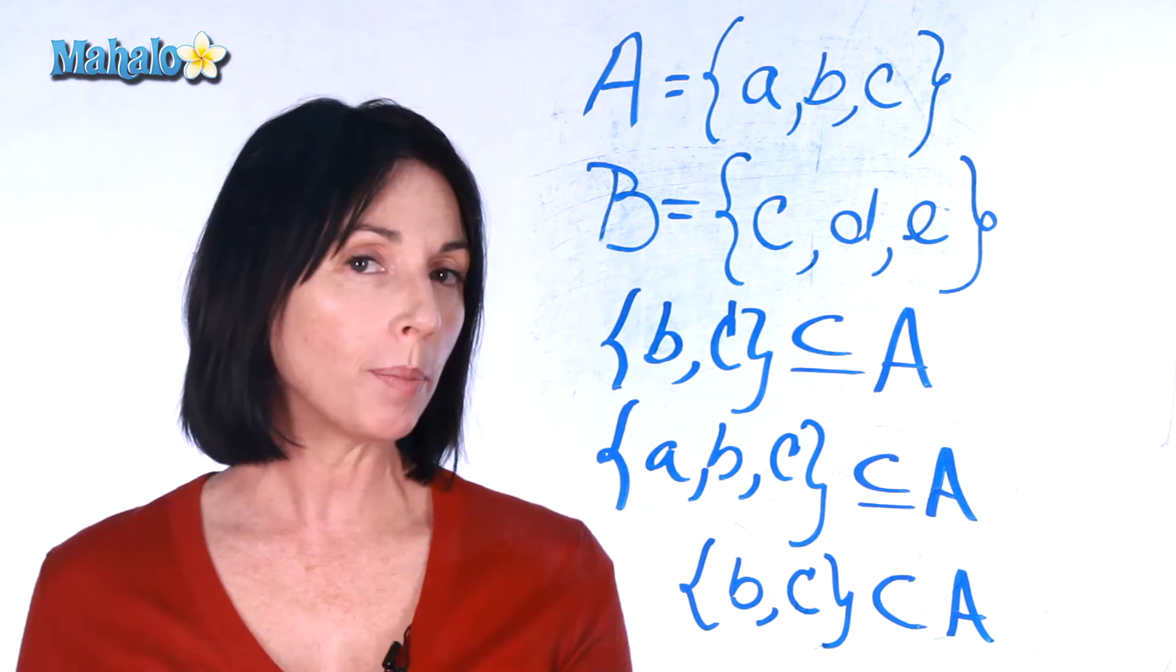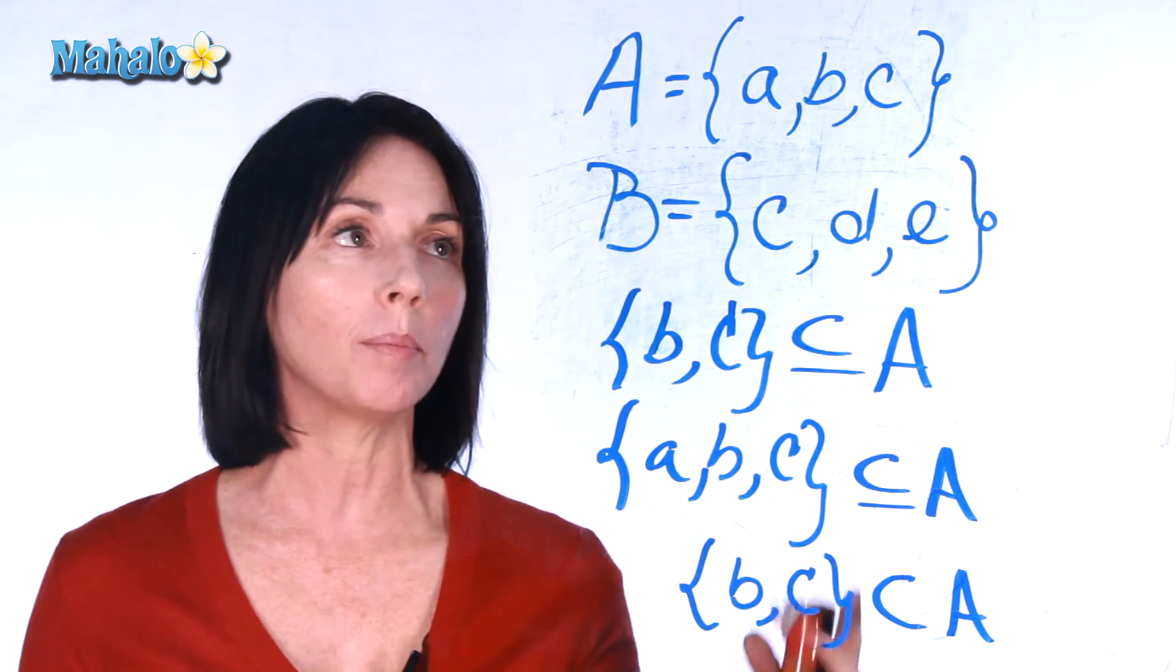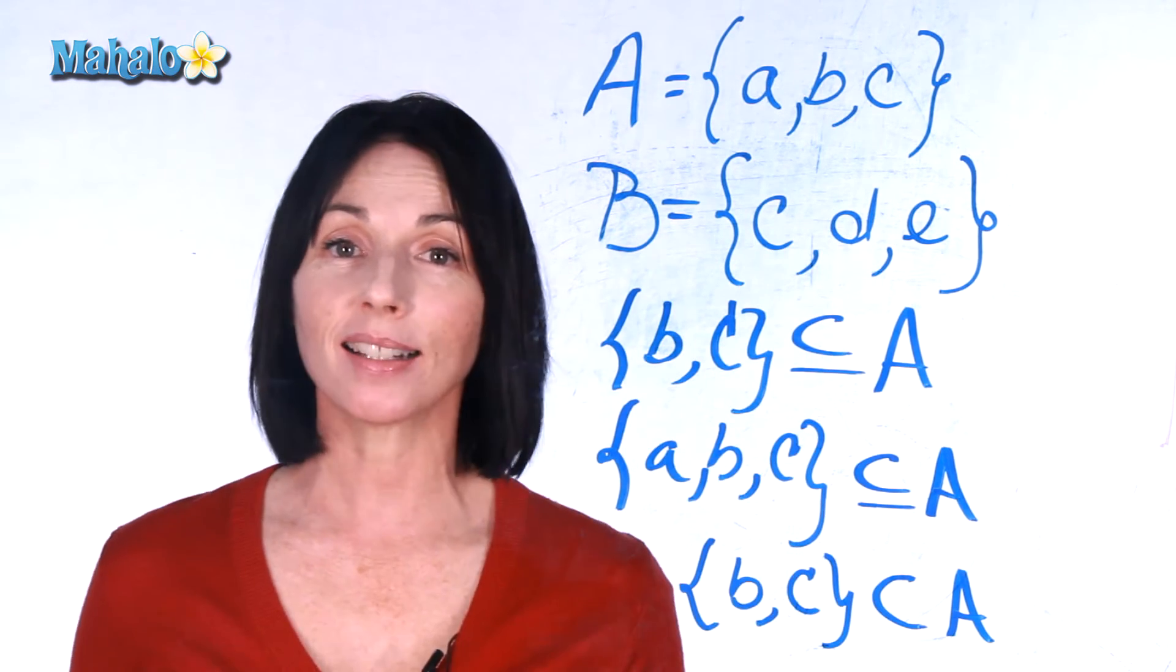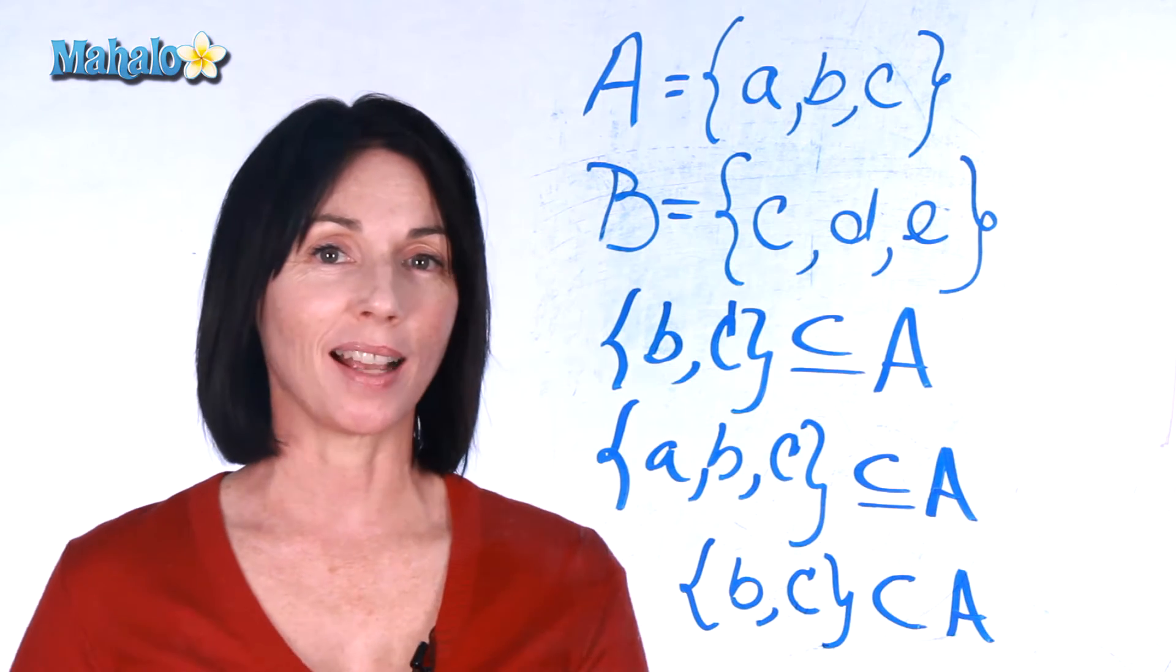For it to be a proper subset, we have to have at least one extra element in the original set that isn't in the subset. So that's an example of subsets and proper subsets.